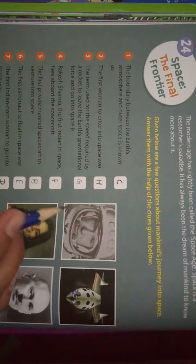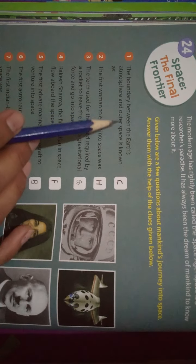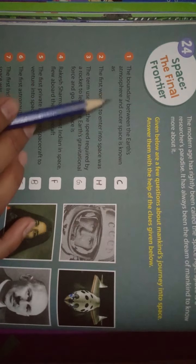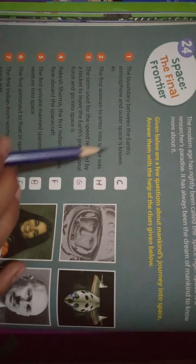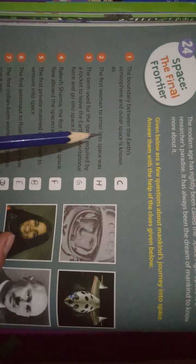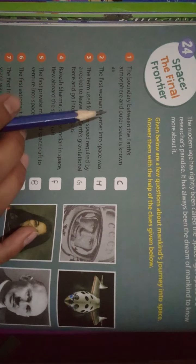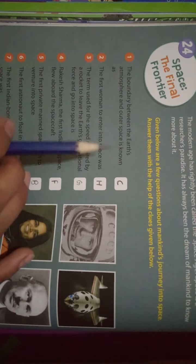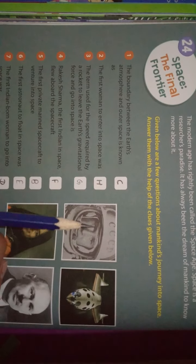First question: the boundary between the Earth's atmosphere and outer space. What is the boundary between Earth and the atmosphere of outer space? The answer is C, the Karman Line. Option C.